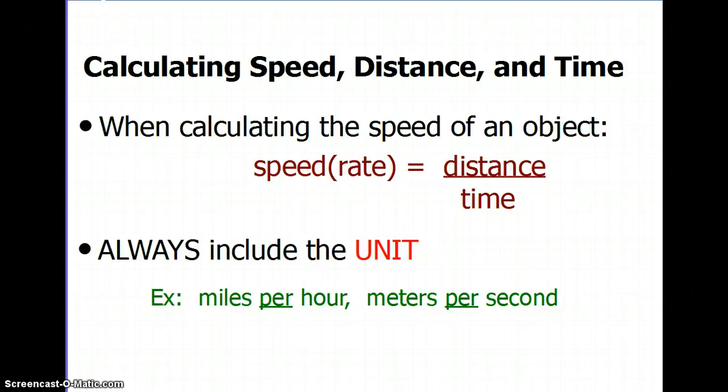The first thing that we wanted to talk to you about is the formula that we would use in order to calculate the speed of an object. Whenever you're calculating the speed of an object, we need two things. We need the distance an object went per unit of time that it took the object to go that particular distance.